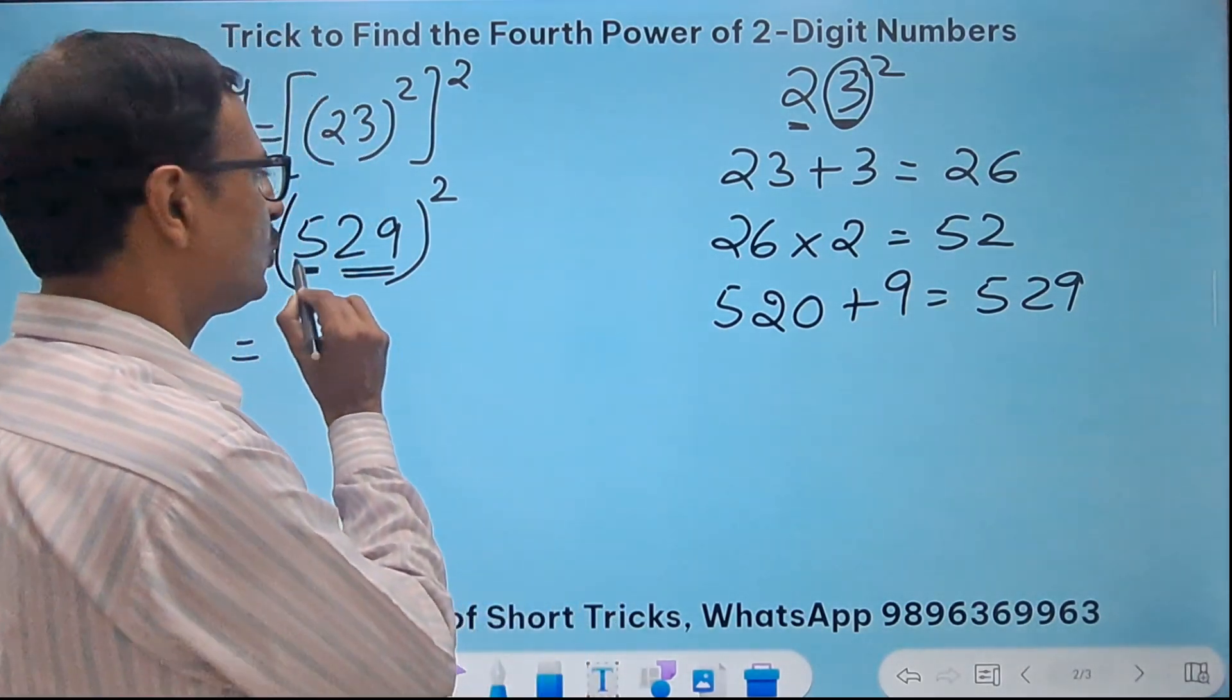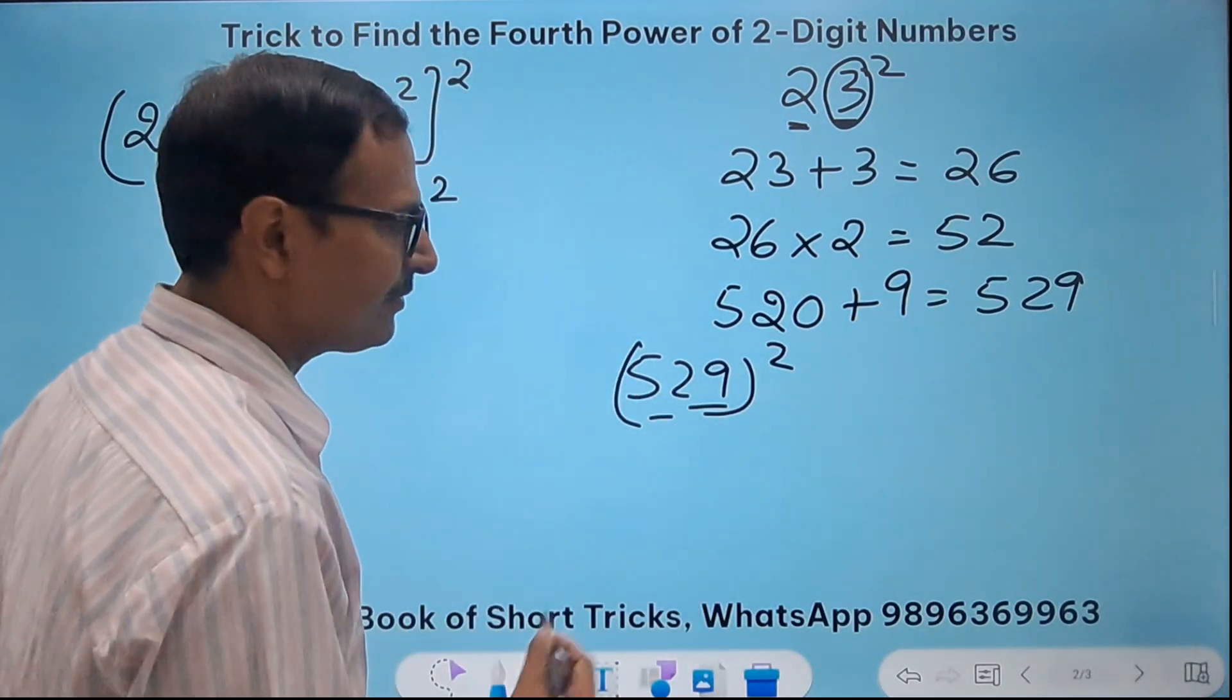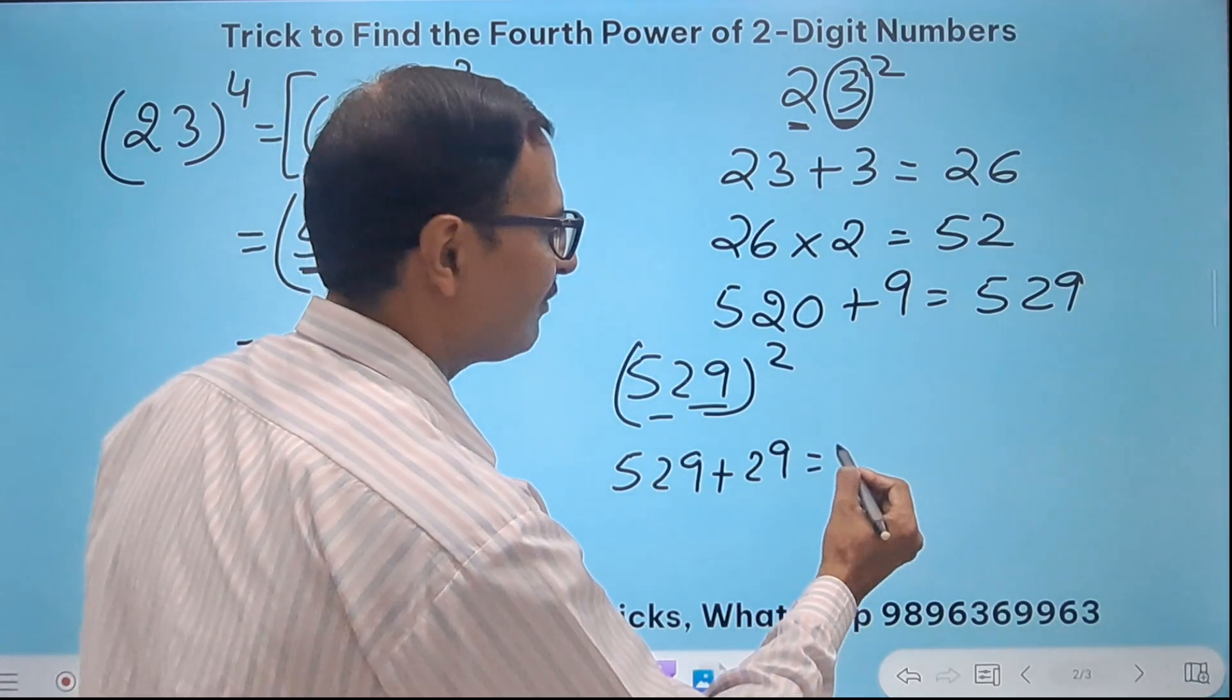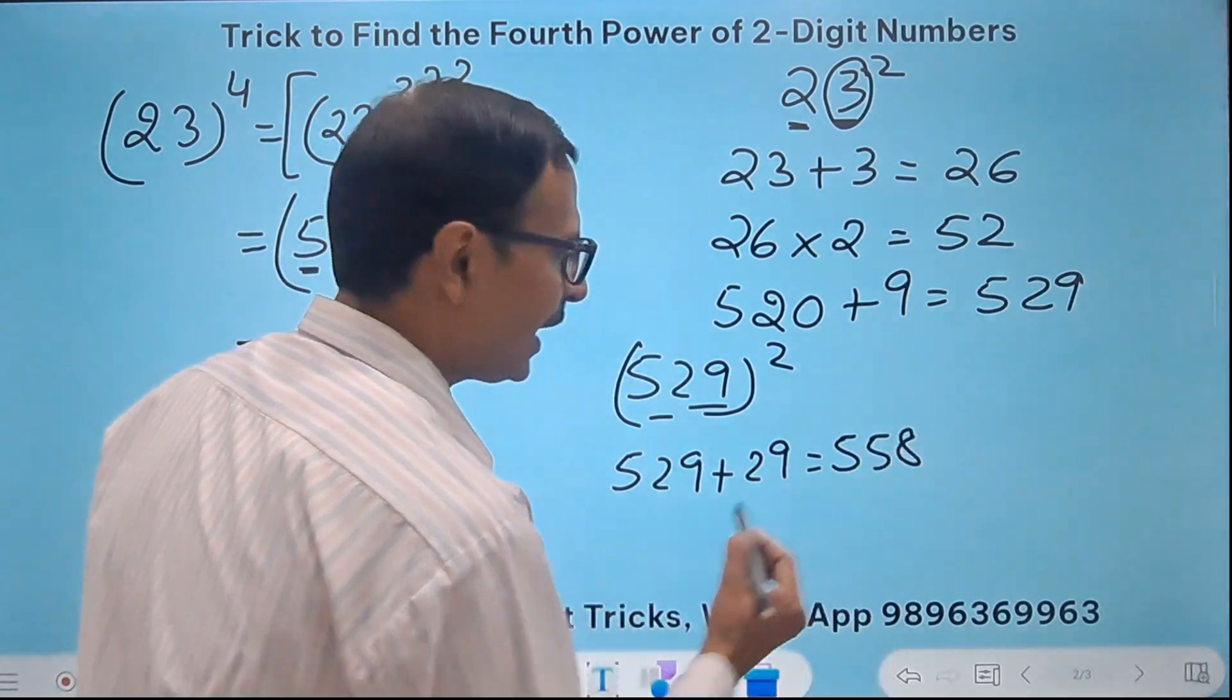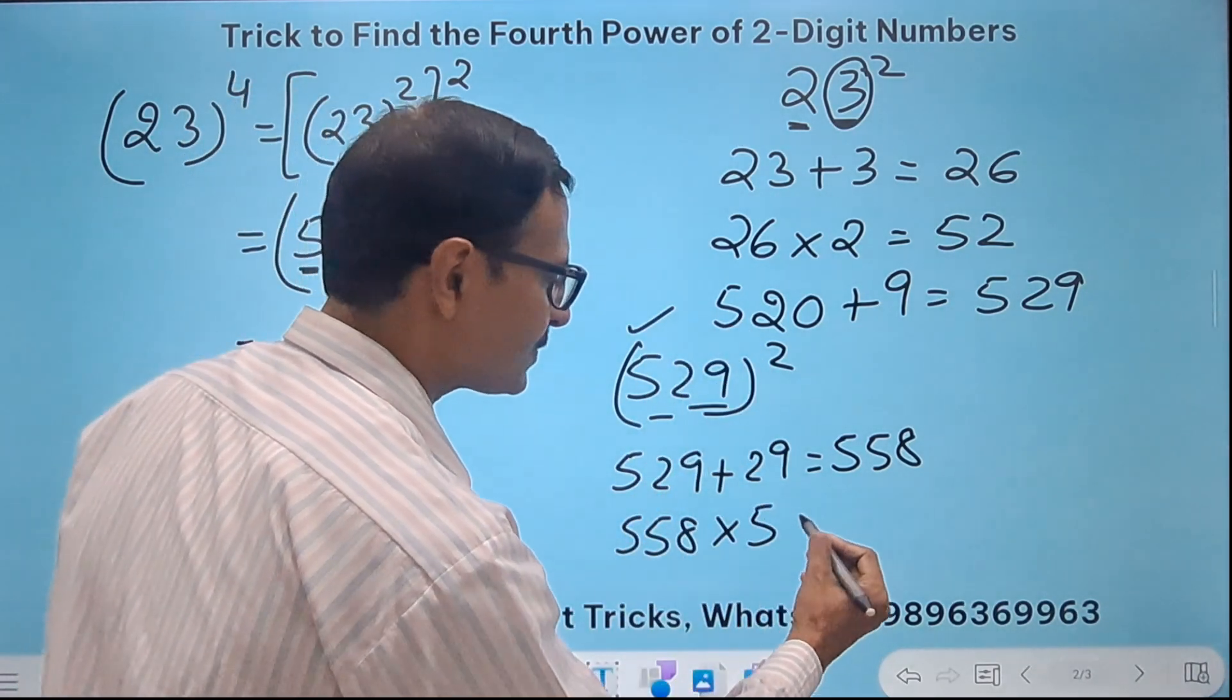Now see how does this help me in getting my final answer. If I have to do 529 square I will do 29 and 5. So 529 plus 29 gets me 558 and then 558 times the first digit 5. Now this is easy.